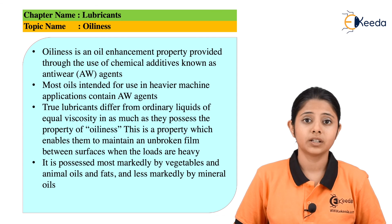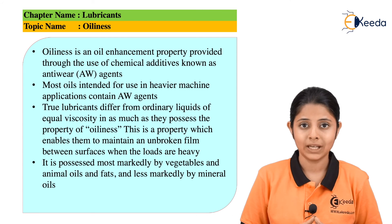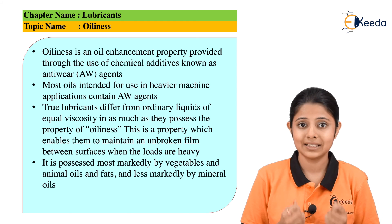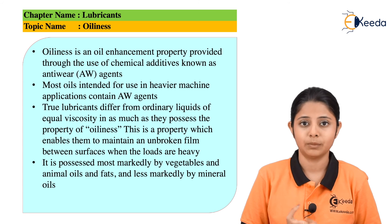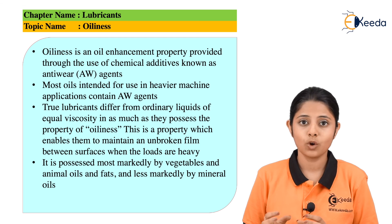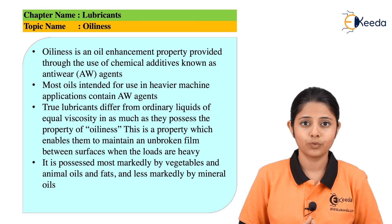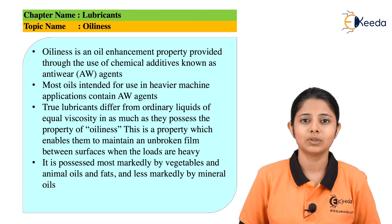In today's topic we studied about one of the most important properties of oil — oiliness. We studied what exactly oiliness is, in which oils we get more oiliness (vegetable oil, animal oil, vegetable fat, animal fat), and in which oils we get less oiliness (mineral oils). We also studied the utility of oiliness and how it is useful for different machines. Thank you so much for watching. Stay tuned and subscribe to Ikira.